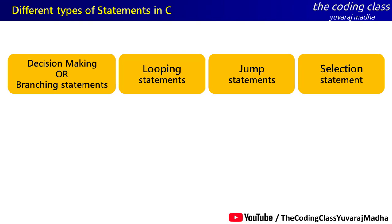Every time we use programming to solve problems, we use it fast and efficiently. We use the decision making statements. The if statement is used in C programs — it executes code based on a condition.